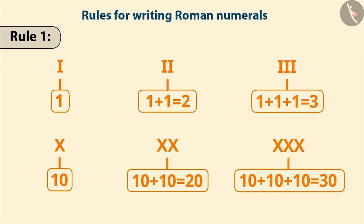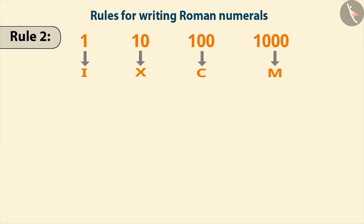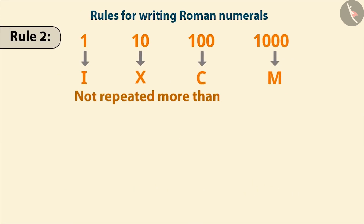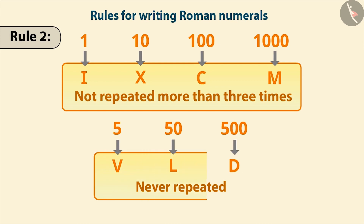Can Roman symbols be repeated any number of times? No. The symbols of 1, 10, 100 and 1000 cannot be repeated more than three times. Whereas the symbols of 5, 50 and 500 are never repeated.